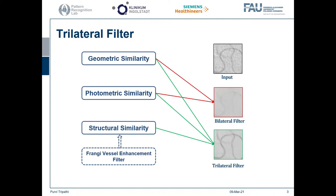The trilateral filter combines the geometric and photometric similarity of bilateral with structural similarity derived from the Frangi vessel enhancement filter, to adapt the kernel for additional denoising while preserving the structural information.